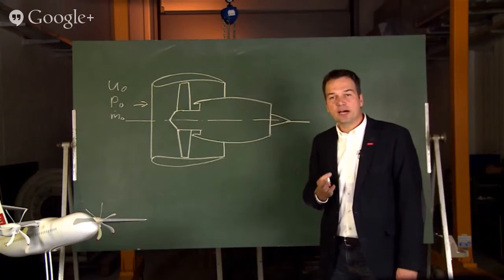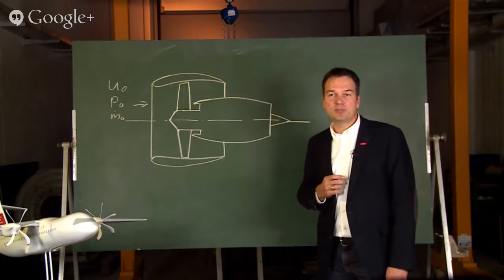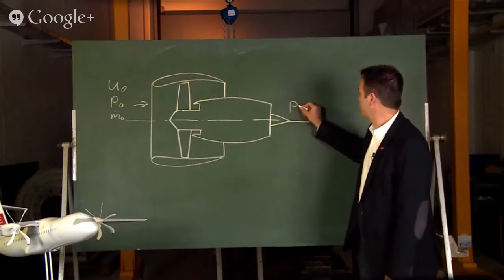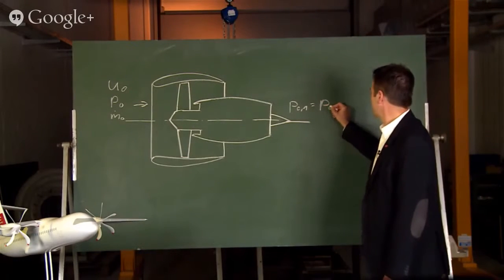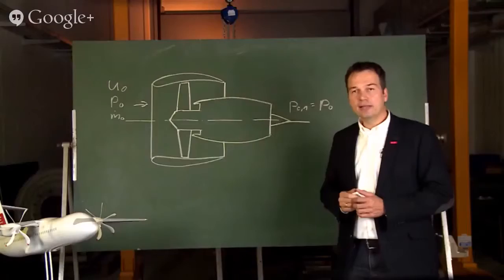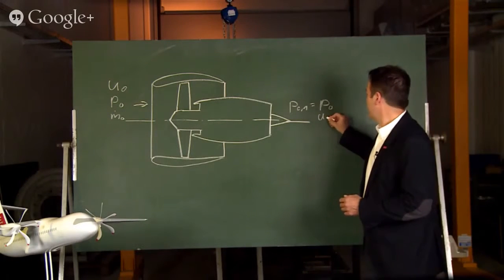For the primary outlet, we can assume that the air is expanded to ambient pressure and it has the exit speed of ue.